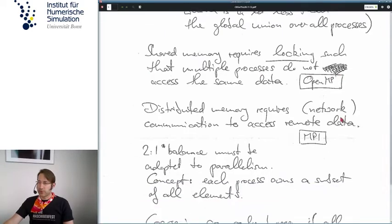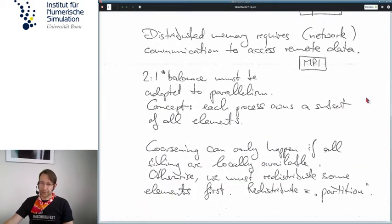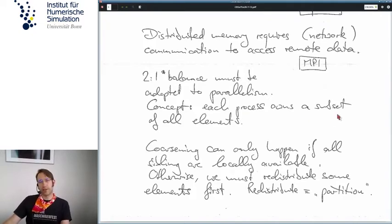All of our algorithms need to be adapted to parallelism. And the concept here is that each process owns a subset of all elements. So for each element, we decide on a certain process to be responsible and to store it, since in distributed memory, the other processes will not store it, which begins to make things a little interesting. Coarsening, for example, can only happen if all siblings are in the same process, because otherwise it would just not be known if other siblings have a yes or no mark for them set.